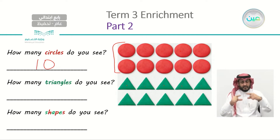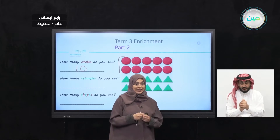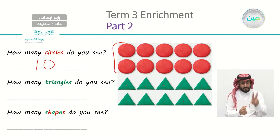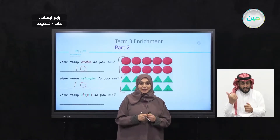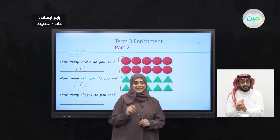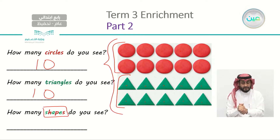How many triangles do you see? By just looking, can you tell how many triangles we have? We need to count them. So we have one, two, three, four, five — another five — six, seven, eight, nine, ten. So here we have another ten. Let's take the ten and the ten together — how much do we have? Ten, twenty. Excellent. Let's read this question together: how many shapes do you see? We have twenty shapes.